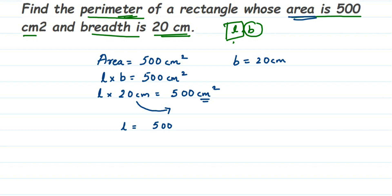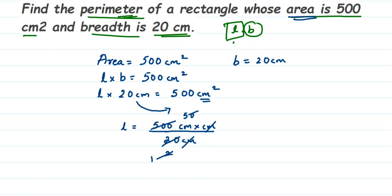So length equals 500 centimeter square divided by 20 centimeter. Centimeter square means centimeter × centimeter, so one centimeter cancels with the centimeter in the denominator. Now cancel 20 and 500: 20 and 500 share a factor of 10, giving 2 and 50; then cancel again by 2, giving 1 and 25. We're left with 25 centimeter.